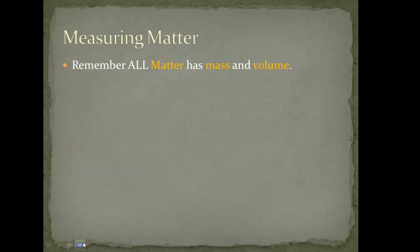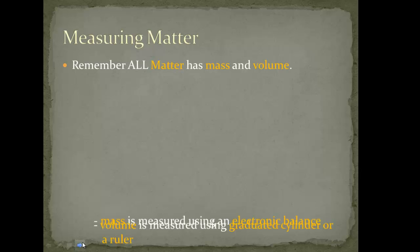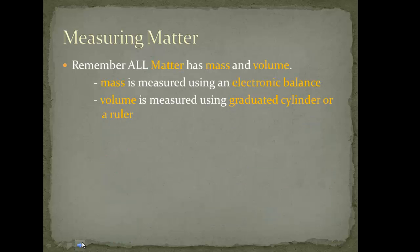How do we measure matter? All matter has mass and volume, so we can use some of the standard equipment we've seen in the lab so far. For instance, we can use an electronic balance for mass, graduated cylinders to measure liquid volume, or a ruler to calculate volume. There are variations on how to use those techniques depending on the substance.